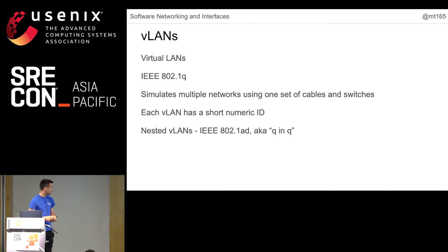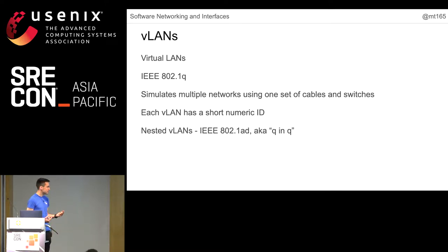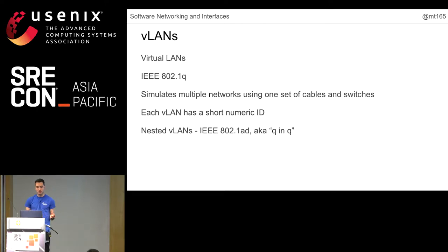VLANs are something you'll need to know about for this talk. This is a virtual LAN, standardized as IEEE 802.1Q — if you hear 'Q' in networking, it's always talking about VLANs. This simulates having multiple networks with one set of wires and one switch, so rather than having three switches to put machines on three separate networks, you can use one and tell it to pretend it's three separate ones. Each VLAN has a short numeric ID, and you set the ports on the switch to be on a particular VLAN.